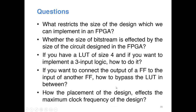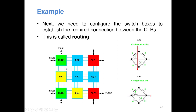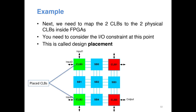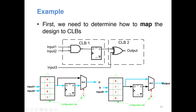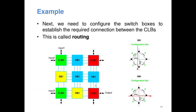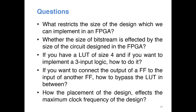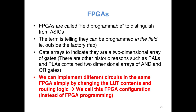Another question: how does the placement of the design affect the maximum clock frequency of the circuit? Placement means determining which physical CLBs inside the FPGA should be used after mapping. You need to consider whether placement affects the clock frequency, and if so, how to perform placement and routing to maximize the clock frequency.